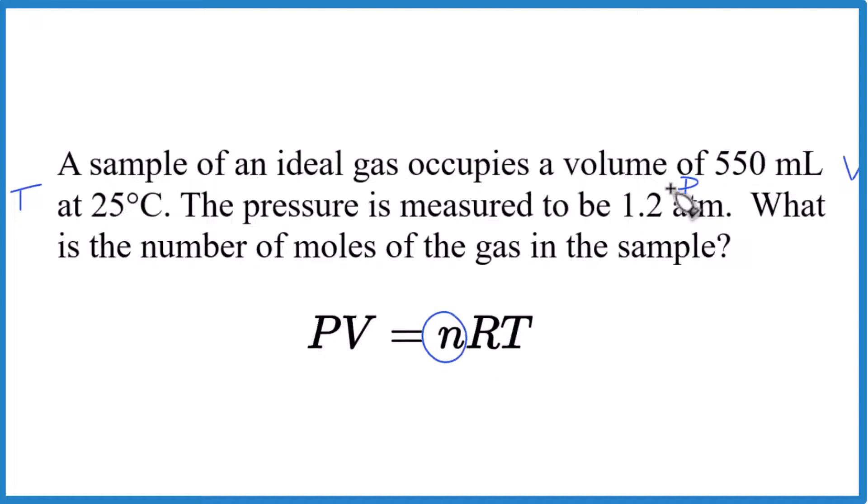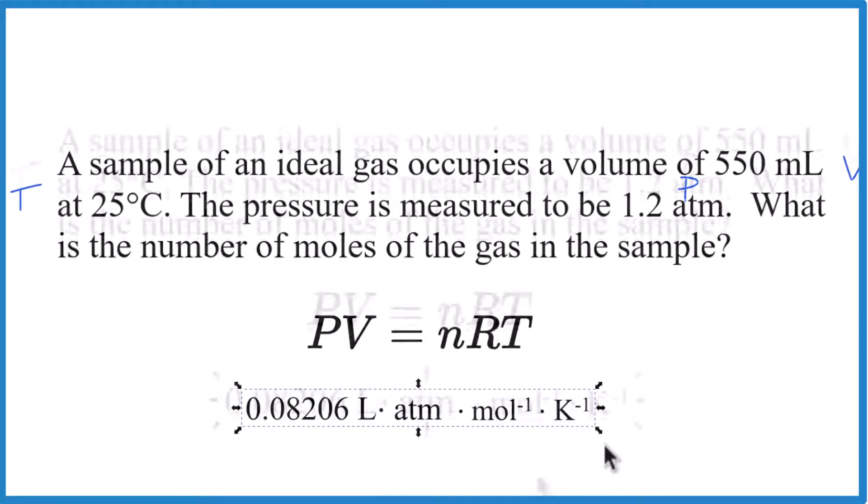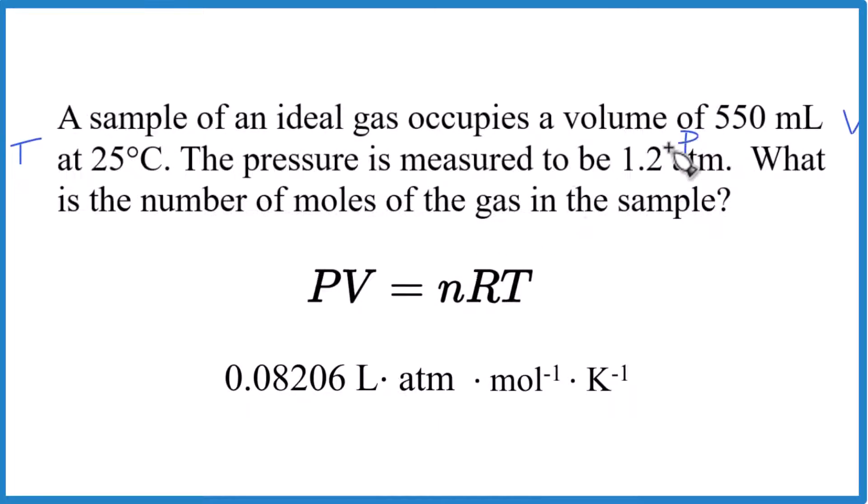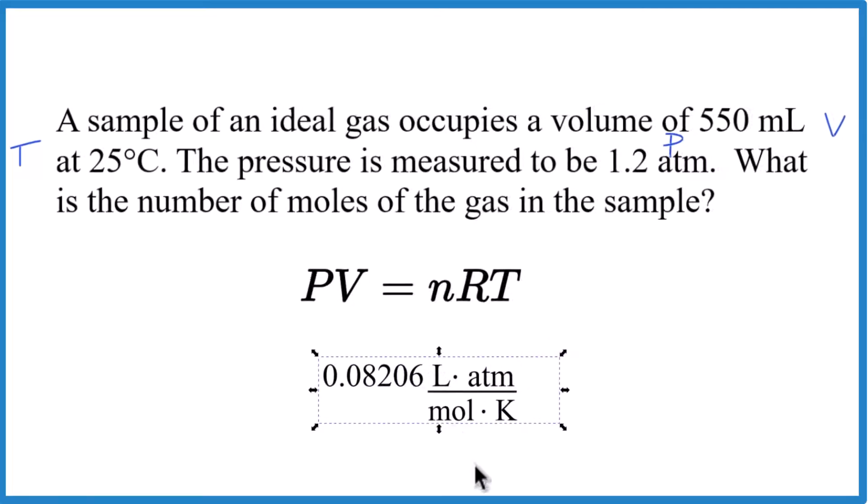Since our pressure is in atmospheres, this is the value that we'll use for R here. You can see we have atmospheres here, and right there in R we have atmospheres. So we know this is the correct value of R to use. Since we have moles to the negative one and Kelvin degrees to the negative one, we can just move this down to the denominator. A little bit easier to work with when we try to cancel units out.